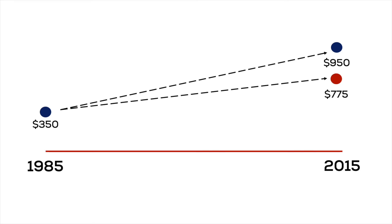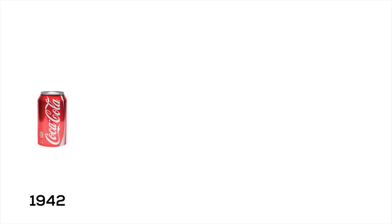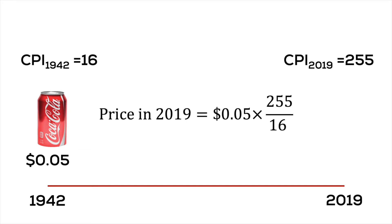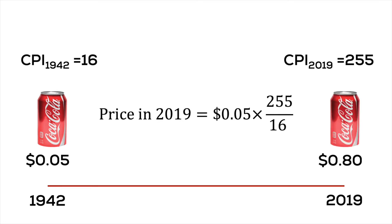CPI allows us to convert dollars from one period to another based on the price level — it allows us to compare across time. For example, a 12-ounce can of Coke in 1942 cost 5 cents. The CPI in 1942 was 16 and the CPI in 2019 was 255. The same can of Coke would cost 5 cents times 255 divided by 16, which equals 80 cents. Are you paying more than 80 cents for a can of Coke? If so, the price of Coke has increased at a rate higher than inflation.